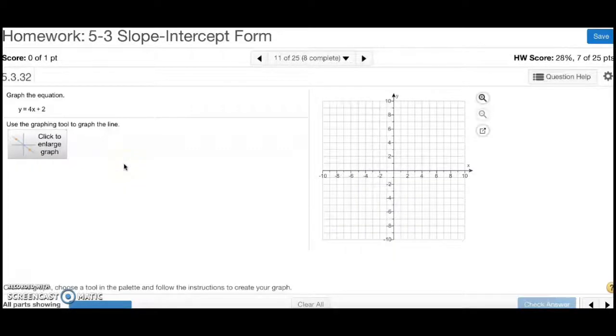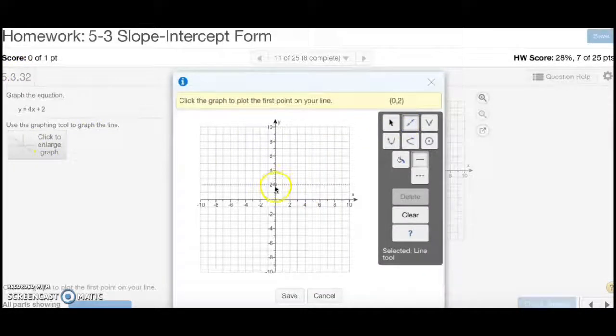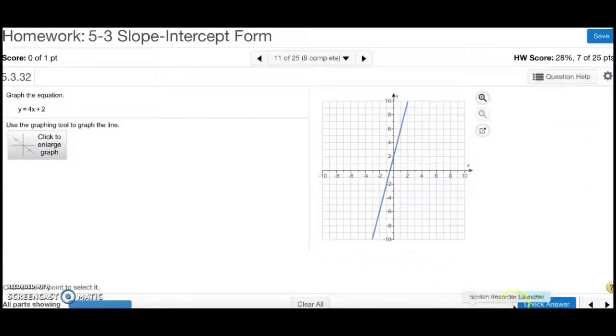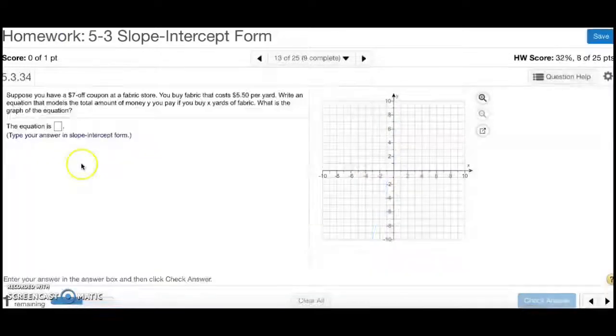Number 11. You're graphing the equation. Click to enlarge the graph. My y-intercept is 2, so start at 2. My slope is 4, so 4 over 1. So, go up 1, 2, 3, 4, 4 over 1. Press save. Check answer. And that's the answer for number 11.